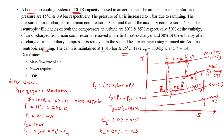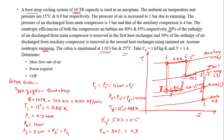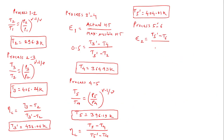For the second heat exchanger, the effectiveness formula is: (T5-dash minus T6) divided by (T5-dash minus T2). Note that many students make a mistake here — they take T5-dash minus T4 instead of T5-dash minus T2. Remember, this heat exchanger exchanges heat between ram air and the compressed air, so the ram air temperature T2 is used, not T4. The effectiveness is 0.3, and with T5-dash and T2 known, T6 comes out to be approximately 371.85 Kelvin.